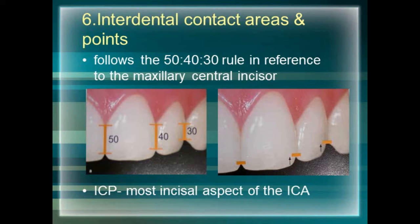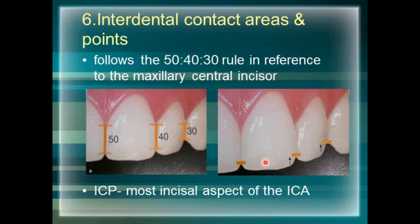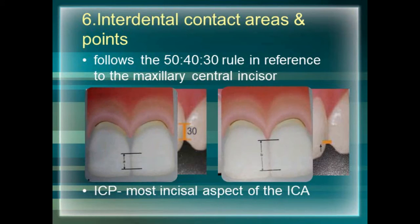The interdental contact point is the most apical point of the interdental contact area. As you go posteriorly from the central towards the canine, the interdental contact point moves towards the cervical area of the tooth. A narrow zone of interdental contact area creates the chance of black triangles, which give an unaesthetic appearance. A broad zone is preferable to avoid this issue.